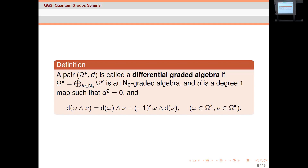Cartan abstracted the properties of the de Rham complex to the definition of a differentially graded algebra (DGA). It's an N-graded algebra where the multiplication respects addition in the natural numbers, and there's a degree-one map that squares to zero satisfying the Leibniz rule. In differential geometry, this is basically the setting for modern global differential geometry that non-commutative geometers like.